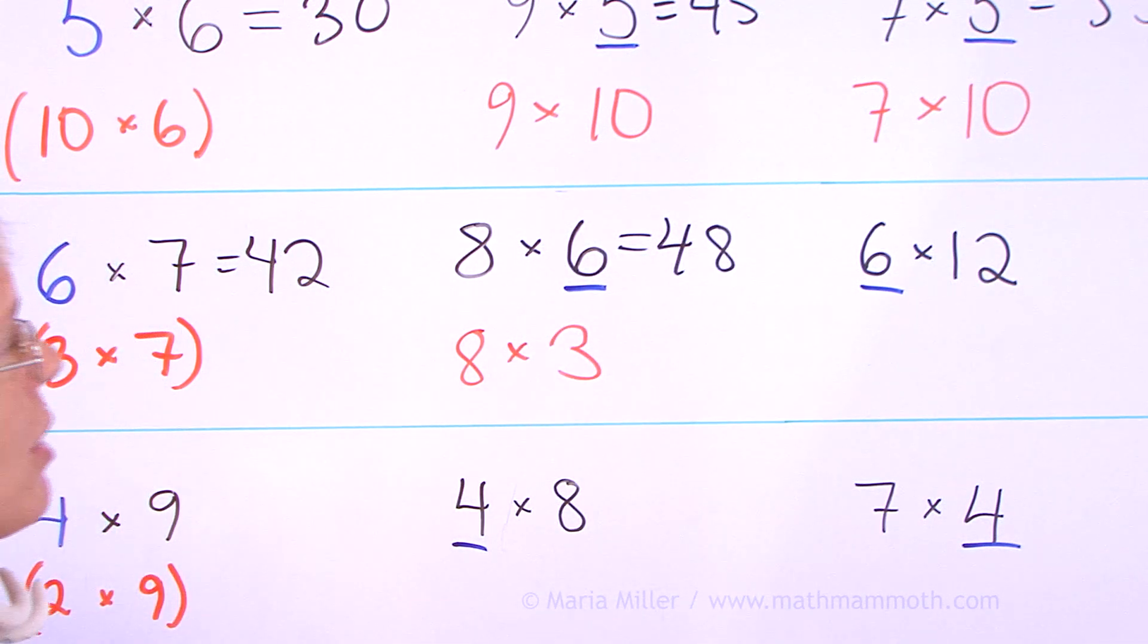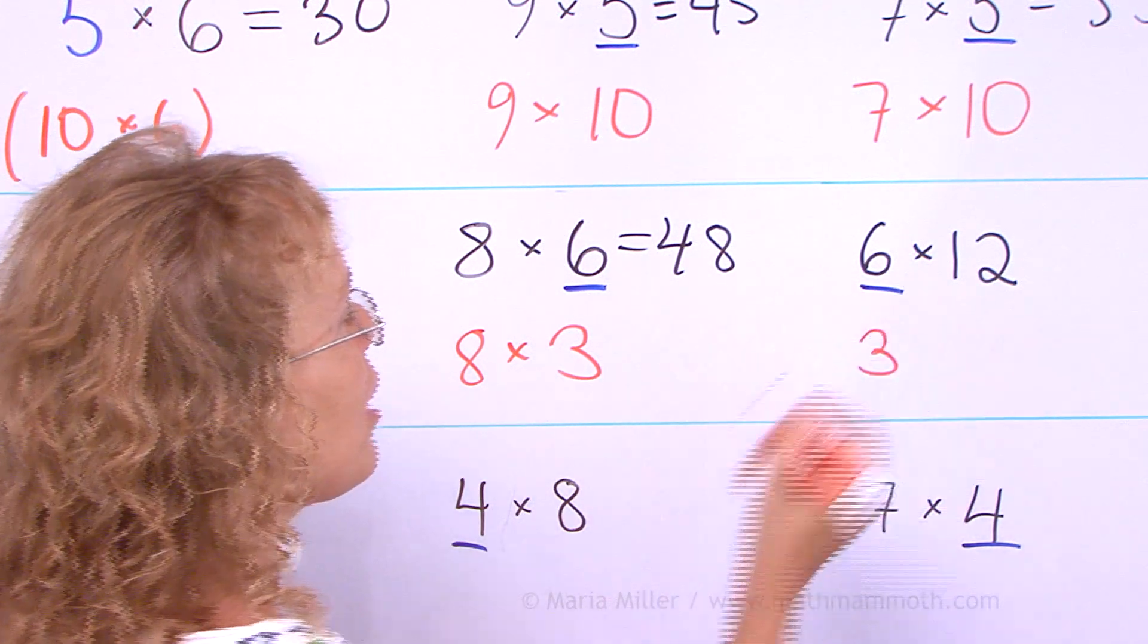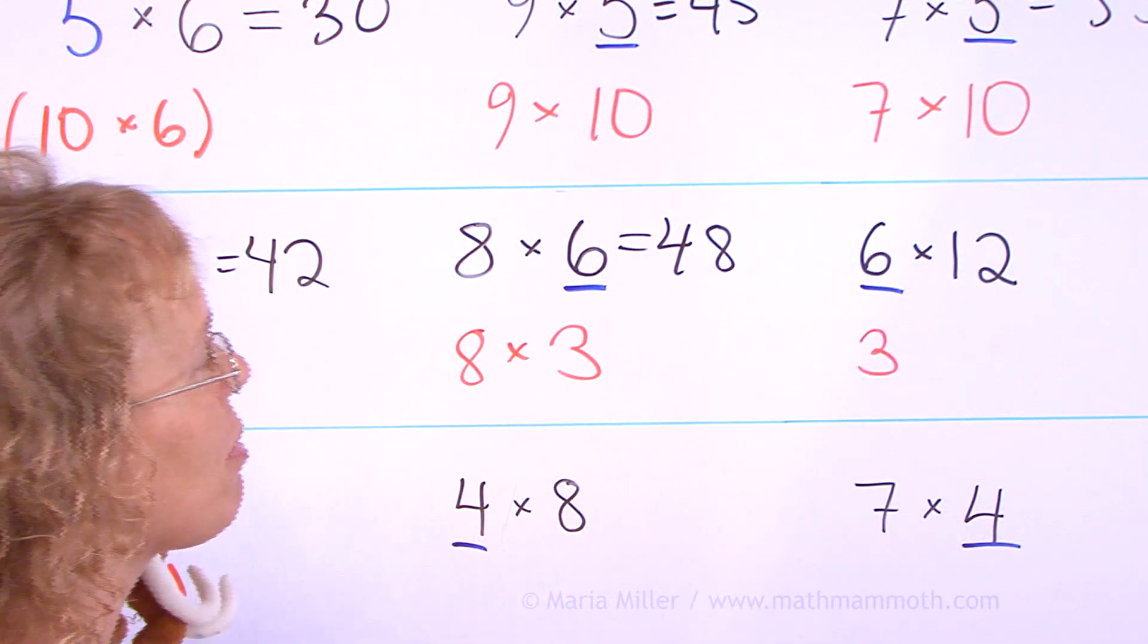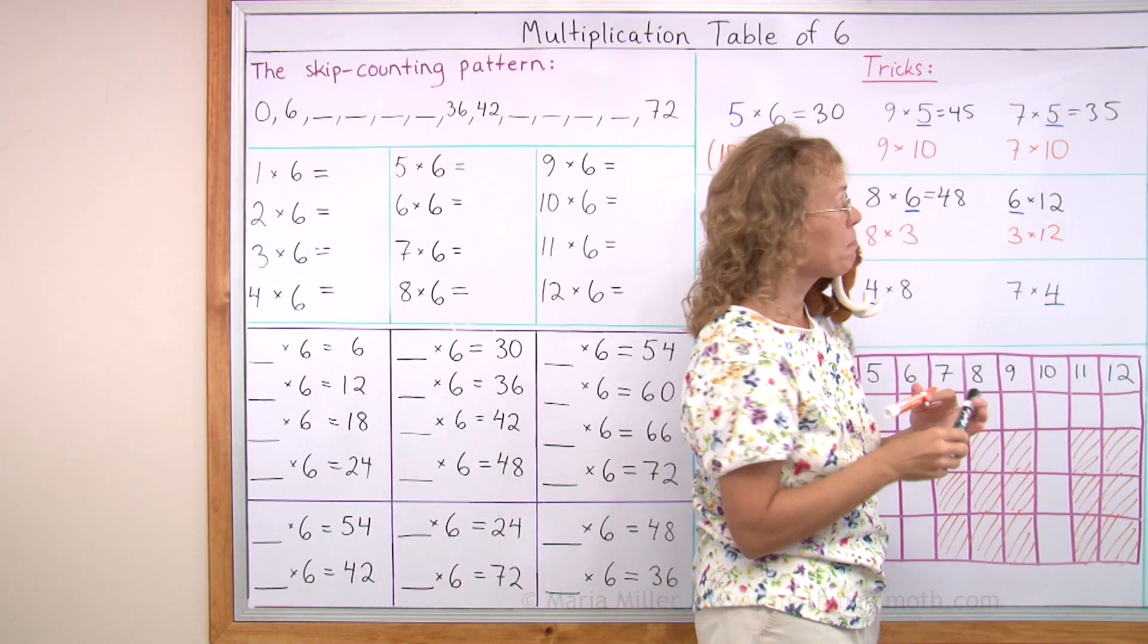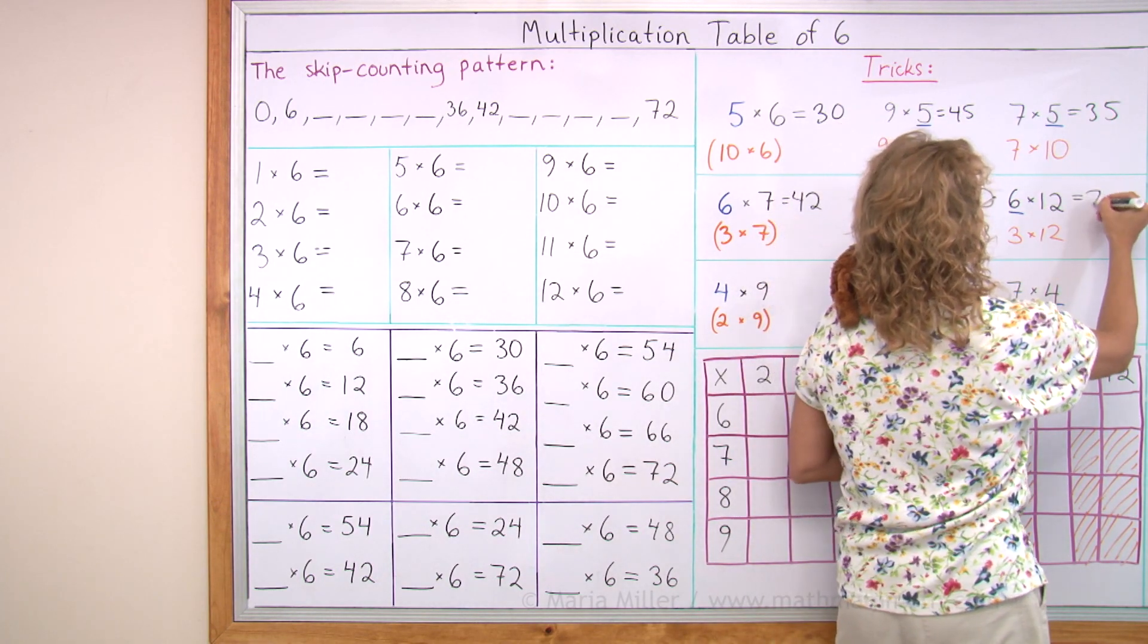Or 6 times 12. Instead of 6, use 3 here. Maybe you remember 3 times 12, 36 and double 36. So we get 72.